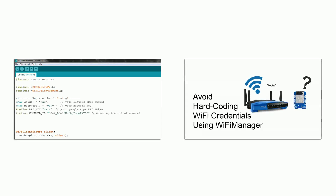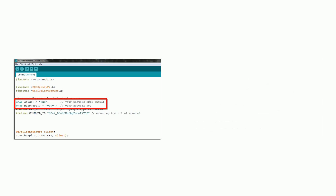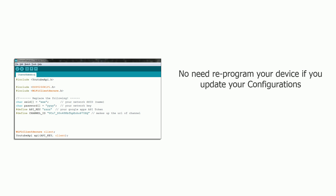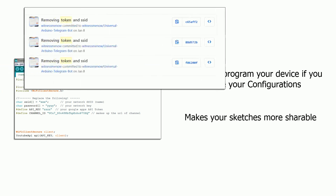In my other video on Wi-Fi Manager I showed you how to avoid hard-coding your Wi-Fi credentials into your sketch. In this video I'm going to show how you can avoid hard-coding other configurations in your sketch, which is useful as you won't need to reprogram your device if you want to change them, and it also makes your sketches more shareable as you don't want to be checking in your API keys.